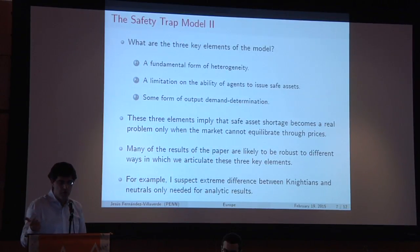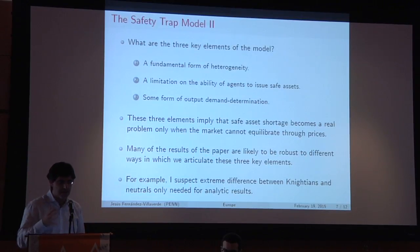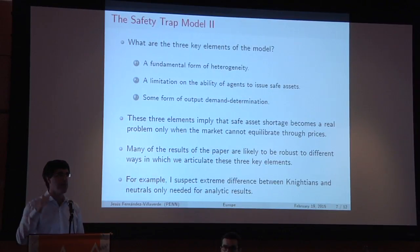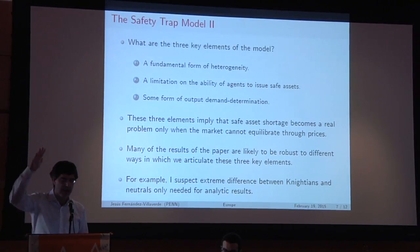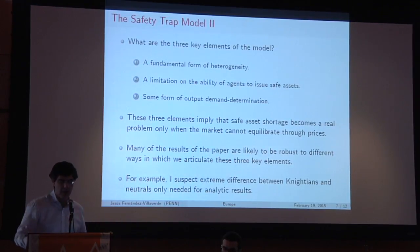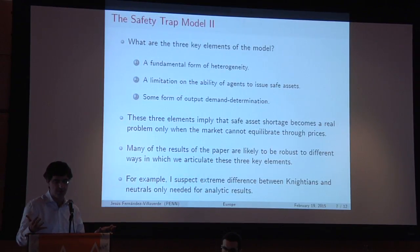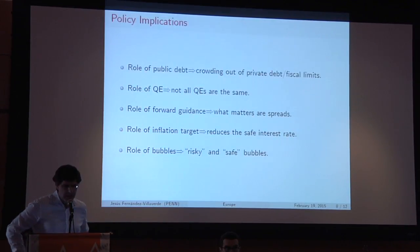The three key elements of the model are: one, a fundamental form of heterogeneity; two, some limitation on agents' ability to issue safe assets; and three, some form of output demand determination. My suspicion is that you can come up with many different environments with these three characteristics — it doesn't have to be Knightians versus neutrals; it could be agents with higher versus lower risk aversion, or young versus old. Different forms of demand determination can produce the same bottom line: demand for safe assets that cannot be satisfied at a positive interest rate, leading to a recession.